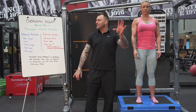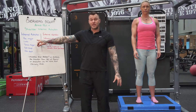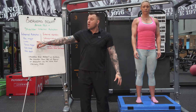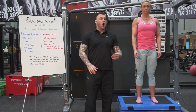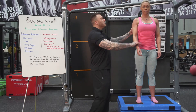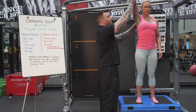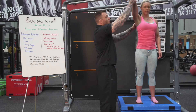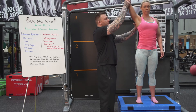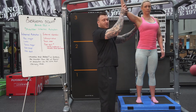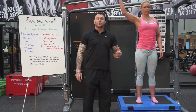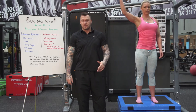So if we find out the internal rotators, we will find out which issues are causing the arms to fall forward or the arms to come back like this during an overhead squat.